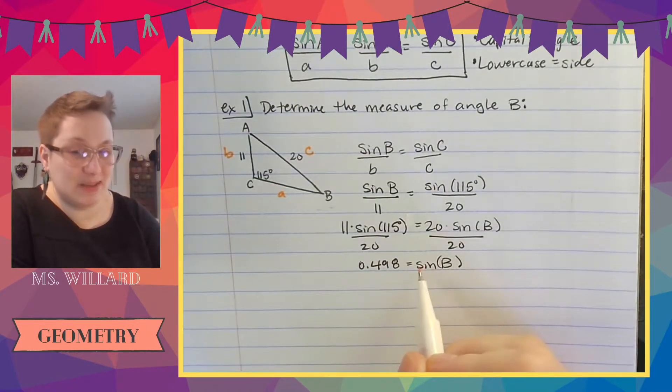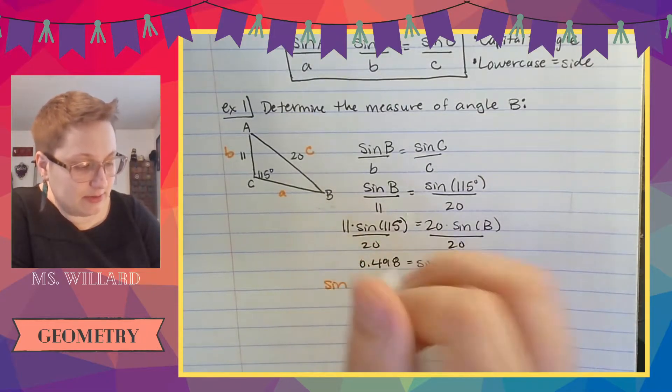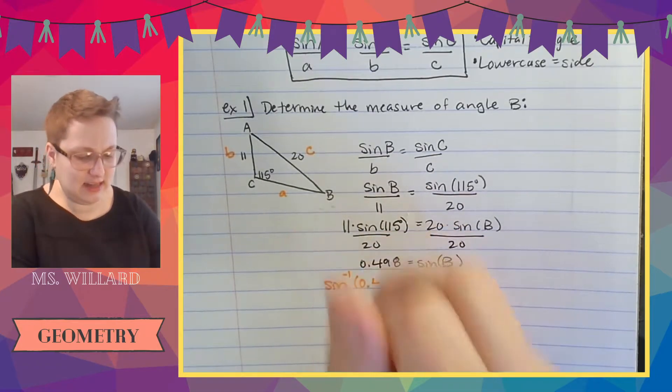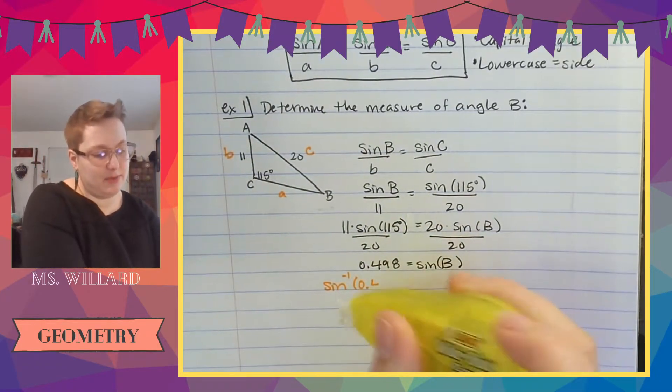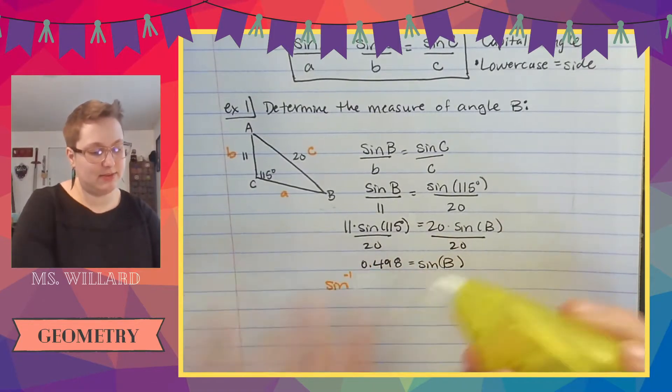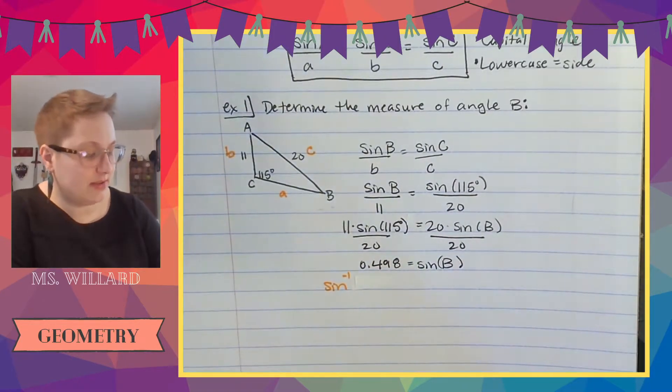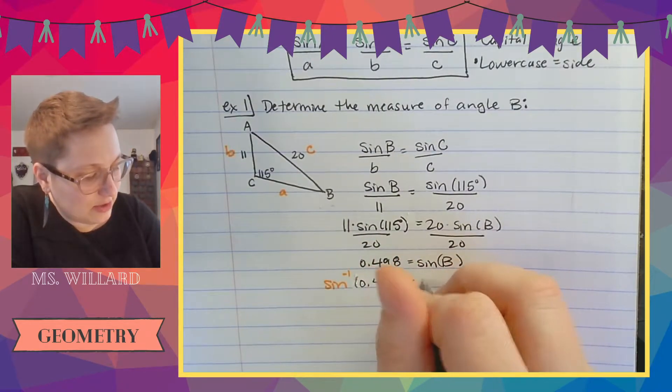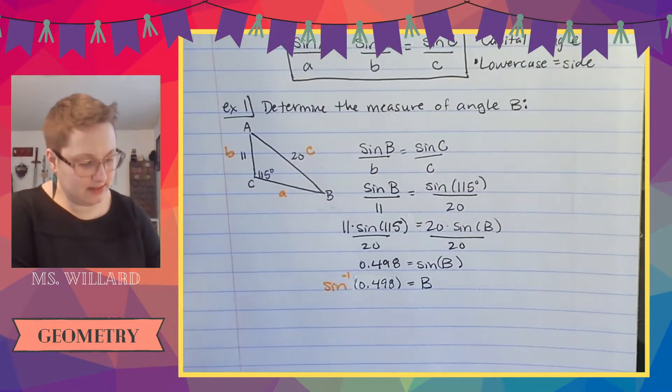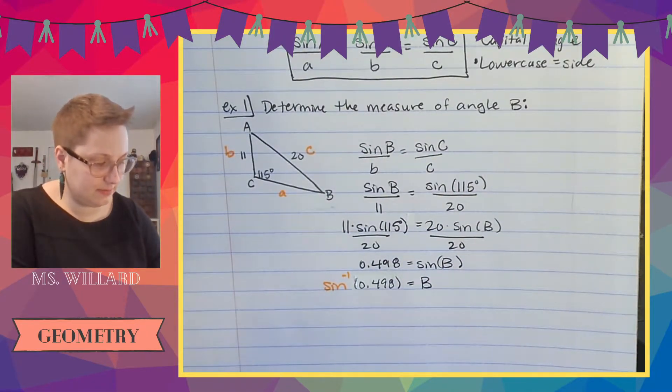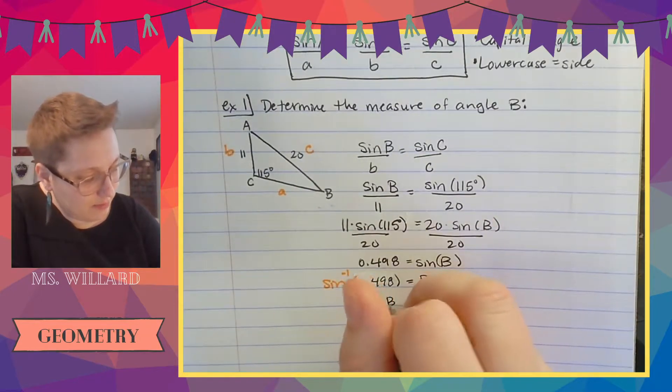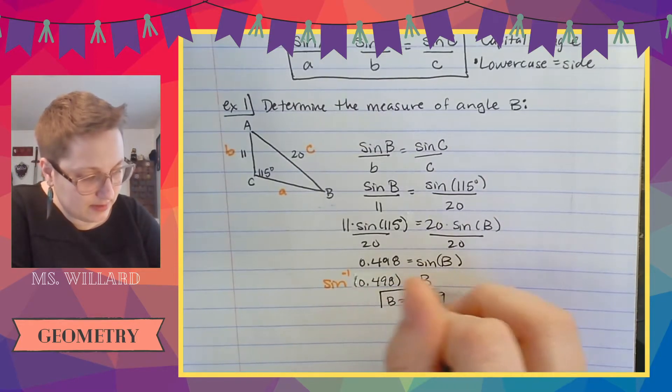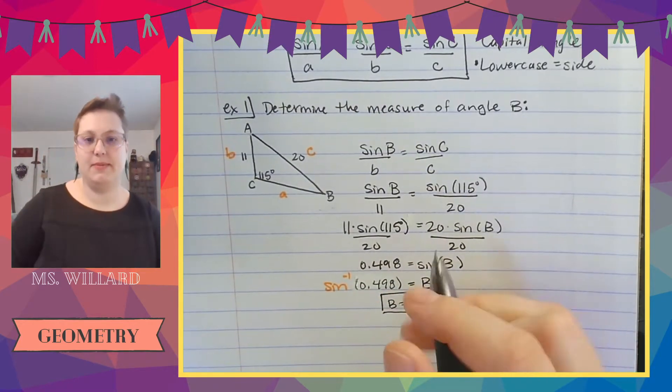So this isn't b, this is what sine of b is. So we know from a couple lessons ago that when we want to find the angle measure, we have to use inverse sine. So sine inverse of 0.498 we'll cross out this sine. So it's just b. So let's figure out what sine inverse of this is. b equals 29.9. Done.